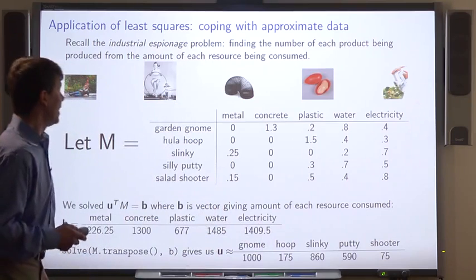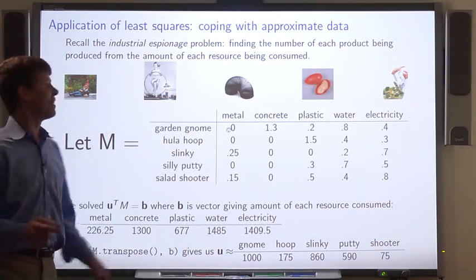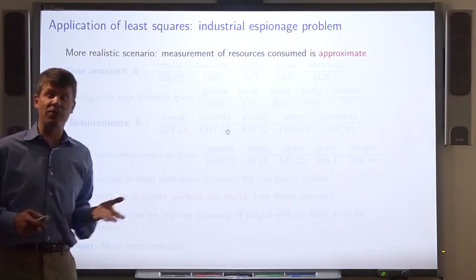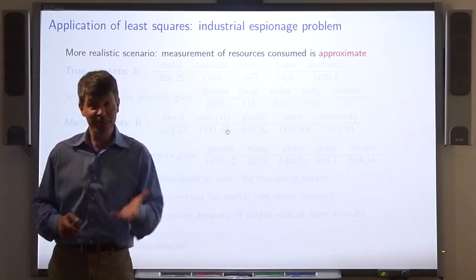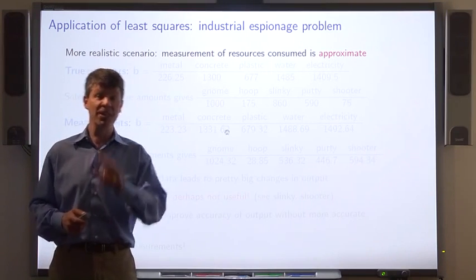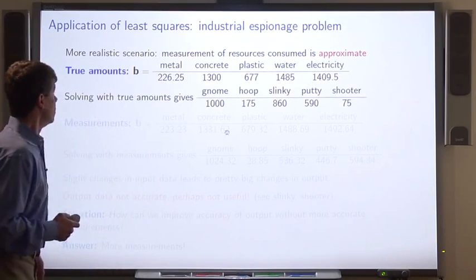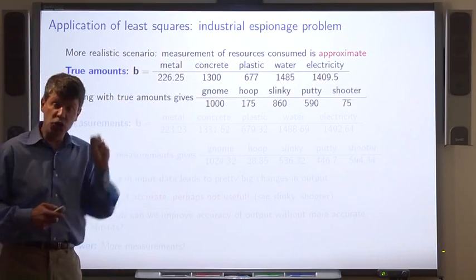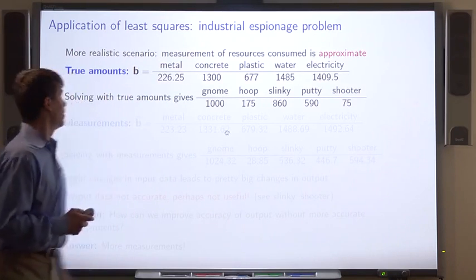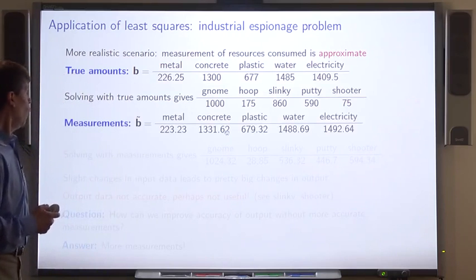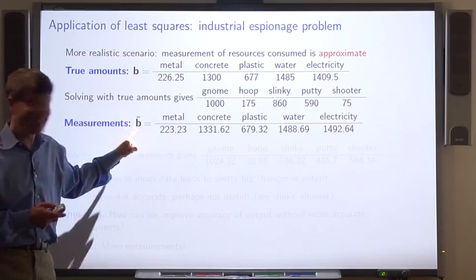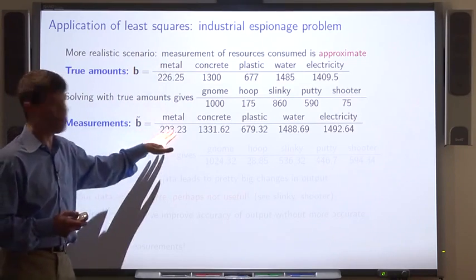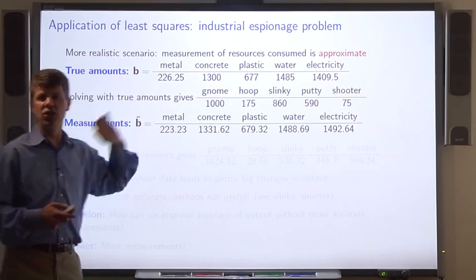So that works great, except that it's really an unrealistic scenario. When you measure something, like the amount of a resource being used, you're probably going to get not the exact value, but an approximate value. So instead of the vector b representing the true amounts of each resource being consumed, what we'll probably get is a vector, we'll call it b tilde, which is an approximation to those, where each number here is an approximation to the true amount.